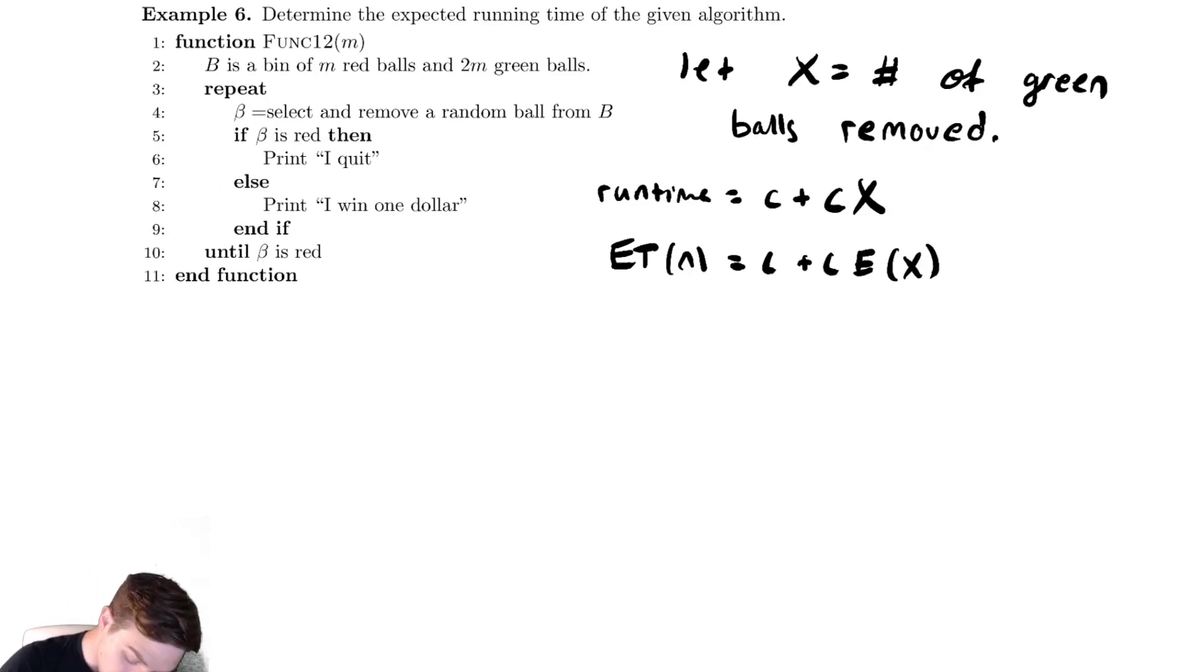So what is the probability that we pull out one green ball? Well on the first pull let's look at the count of the various objects. We initialize our data structure to have 2m green balls and m red balls, so there are 2m green out of 3m total, which is just two-thirds.